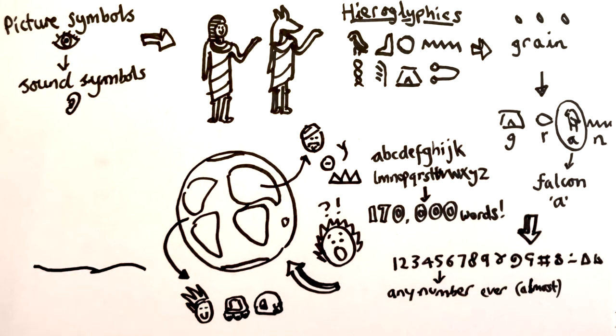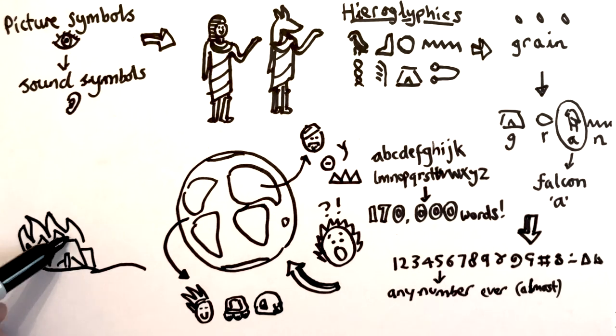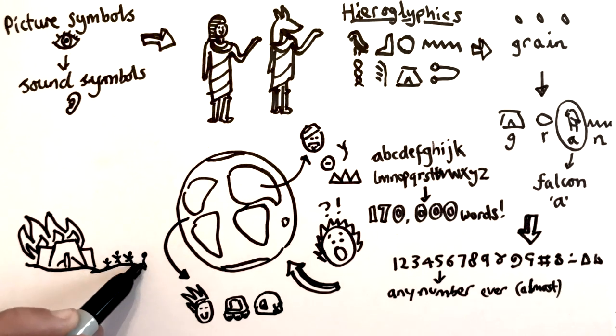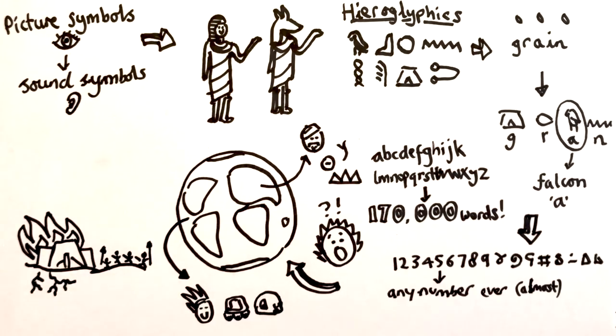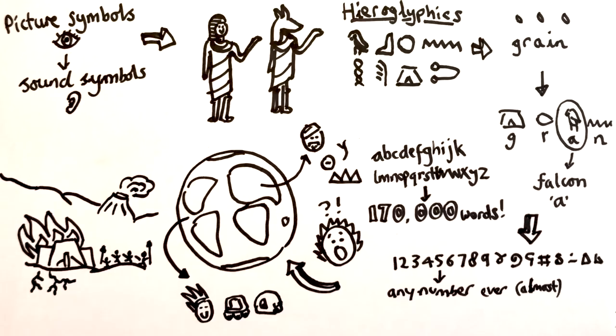But then, just over 3,000 years ago, lots of ancient civilizations collapsed in the Bronze Age collapse. Nobody knows exactly why, but it was probably a mixture of drought, fighting, and maybe some volcanoes.